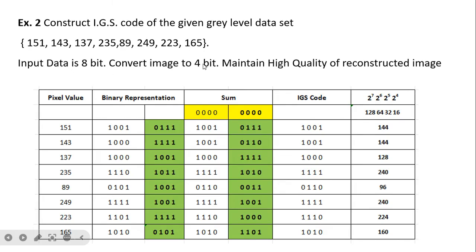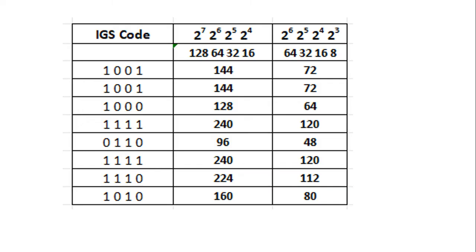Now a similar second example: again represent the data in 8-bit and convert the image using IGS. For the first pixel, there is no previous number, so 0000 is taken. We then add the 4 LSBs of the previous pixel to the current number. When all four MSBs are ones, we do not add the previous 4 LSBs but keep the number as it is. Following the same procedure as Example 1, we obtain the IGS codes — using 2^7, 2^6 weighting to maintain high quality.